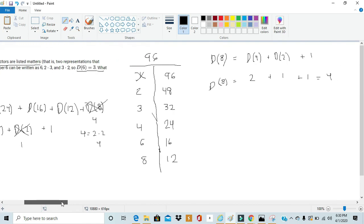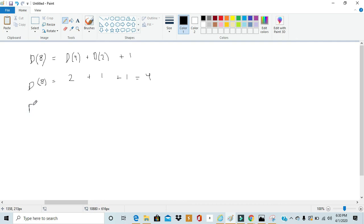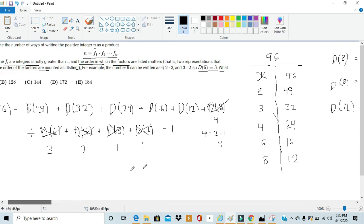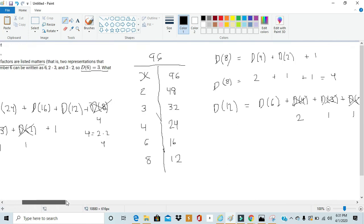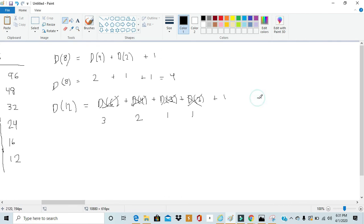Next value we need to search for is d(12). We do the same thing with d(12). We write it as its factors, the d's of its factors, and then tag on a 1 at the end. d(6) plus d(4) plus d(3) plus d(2) plus 1. Well, we've established that d(2) and d(3) are 1's, and then d(4) is just 2, and then d(6) it gave us in the problem to be 3. So d(12) is going to equal 3 plus 2 plus 1 plus 1 plus 1, which is 8.